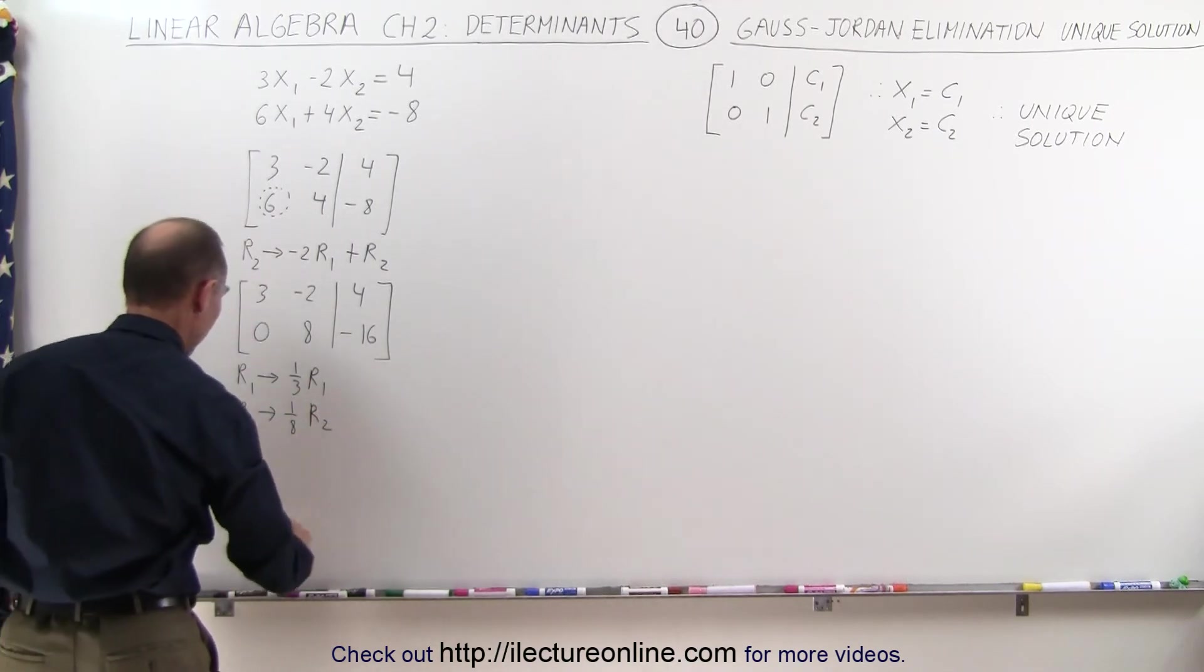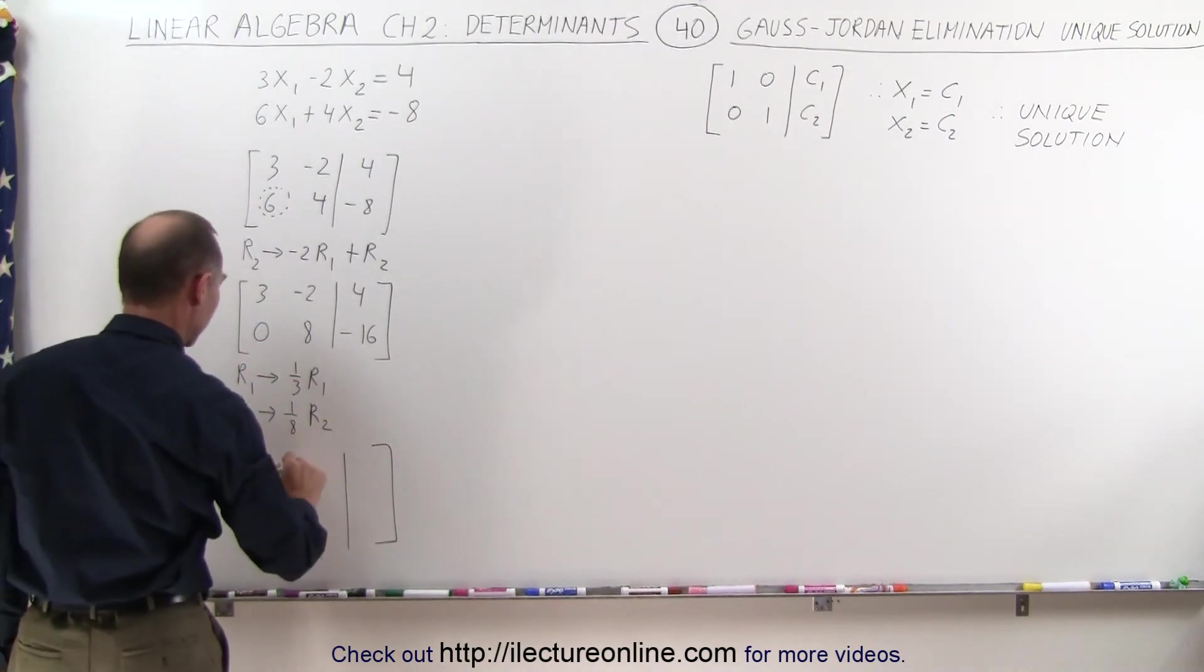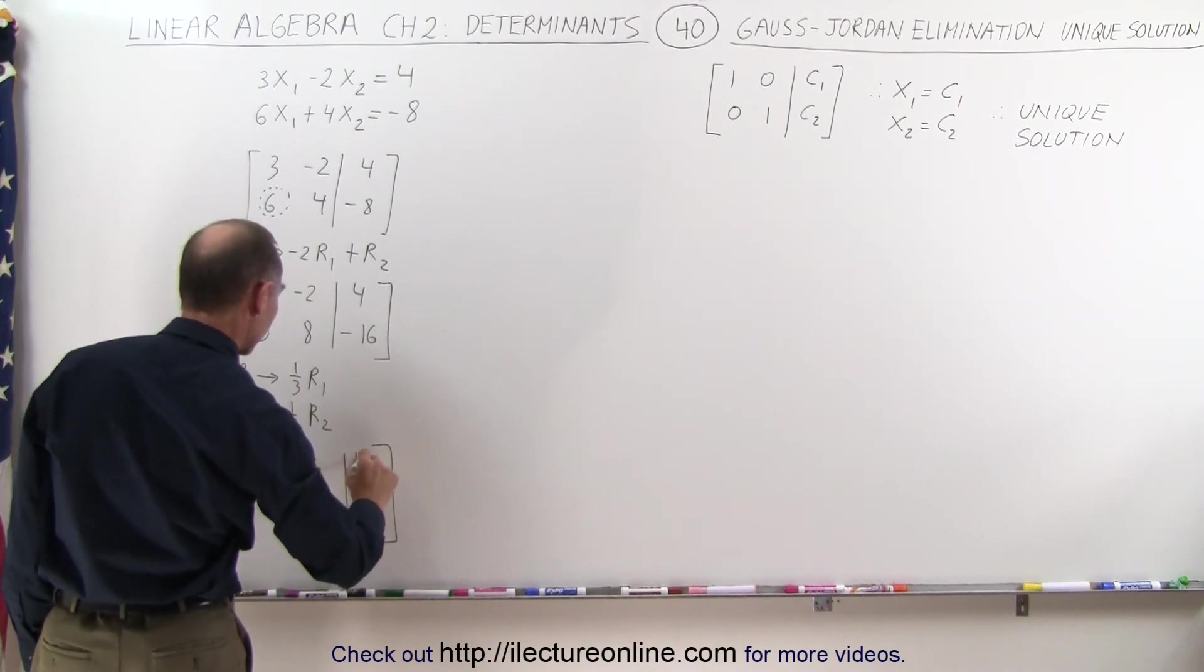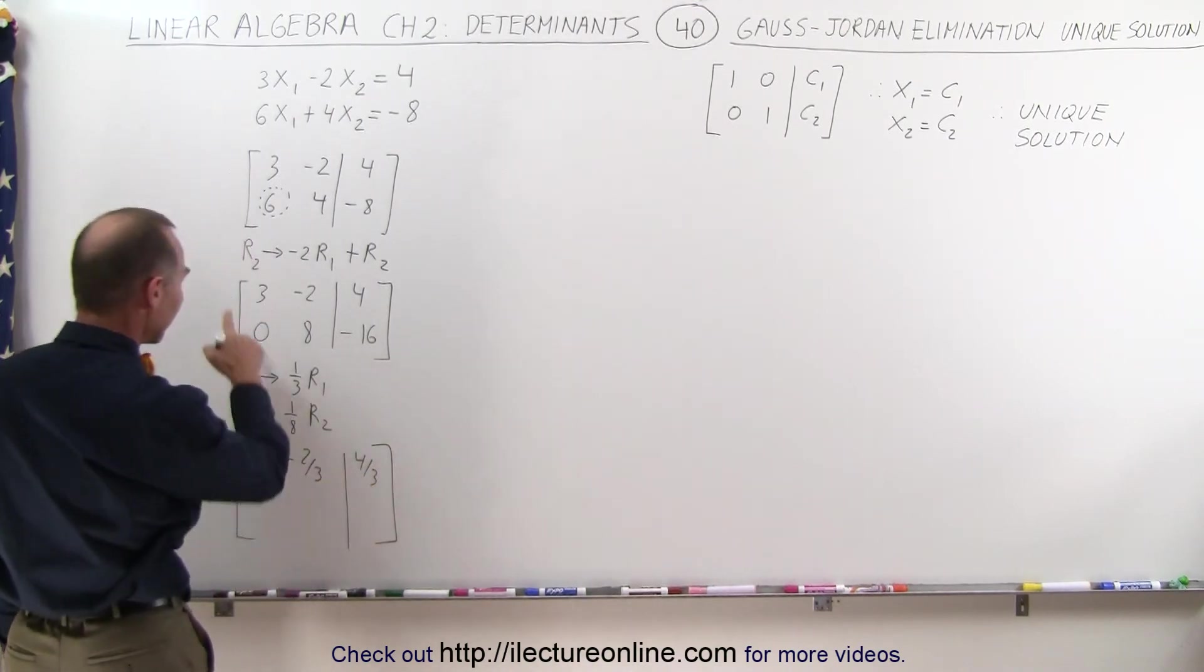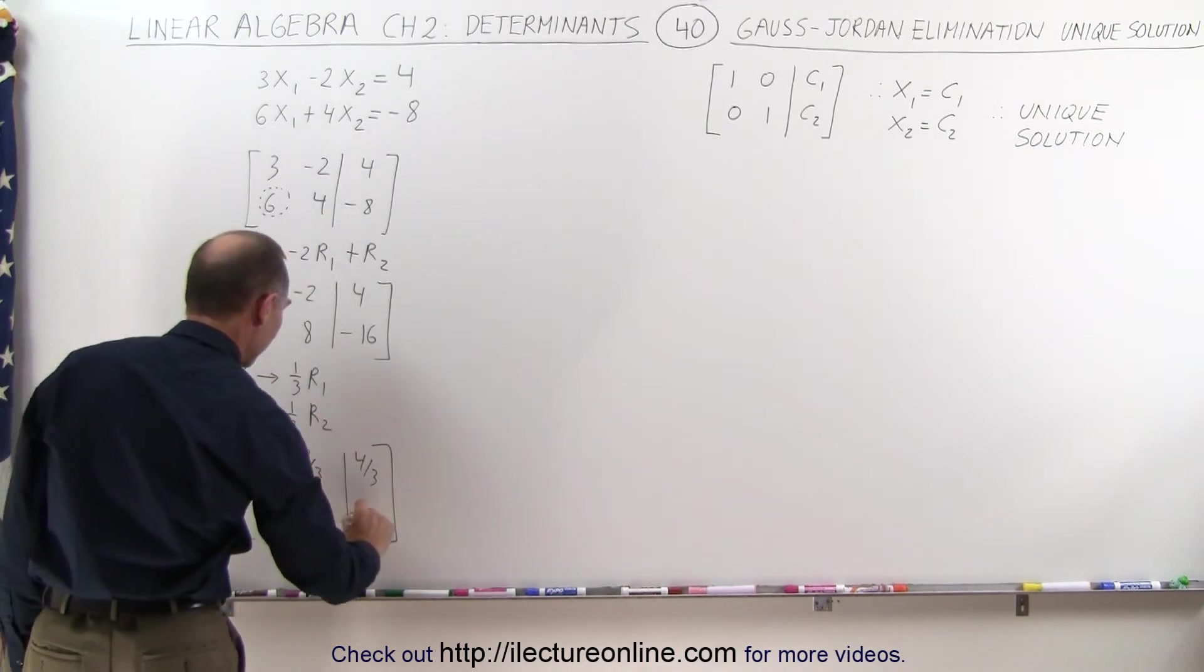When we do that, we get the following matrix. First row, we get a 1, a minus 2/3, and we get 4/3 over here, because we're dividing everything by 3. And on the second row, we get a 0, a 1, and a minus 2.